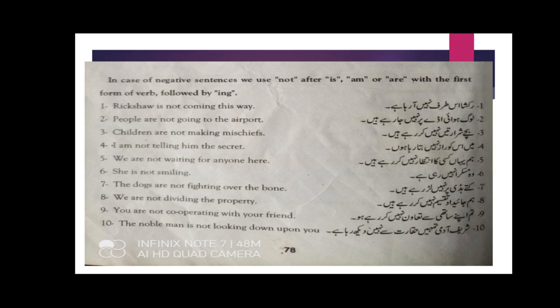'We are not waiting for anyone here.' 'She is not smiling.' 'The dogs are not fighting over the bone.' 'We are not dividing the property.' 'You are not cooperating with your friend.' 'The noble man is not looking down upon you.' So these are the examples of negative sentences from your book.